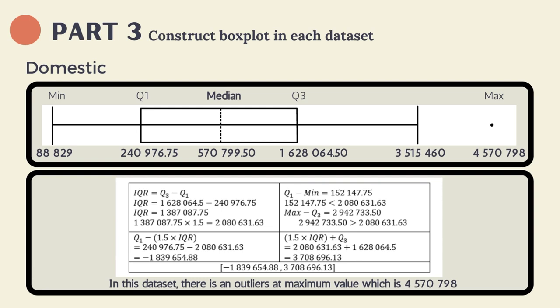Next, construct a box plot for the domestic dataset. First, we need to calculate the interquartile range, which is IQR. The formula for IQR is third quartile minus first quartile. After calculation, the IQR for domestic is 1,387,087.75. The formula to find outliers uses first quartile minus 1.5 times IQR as the lower fence and third quartile plus 1.5 times IQR as the upper fence. For the domestic dataset, there is an outlier at the maximum point.